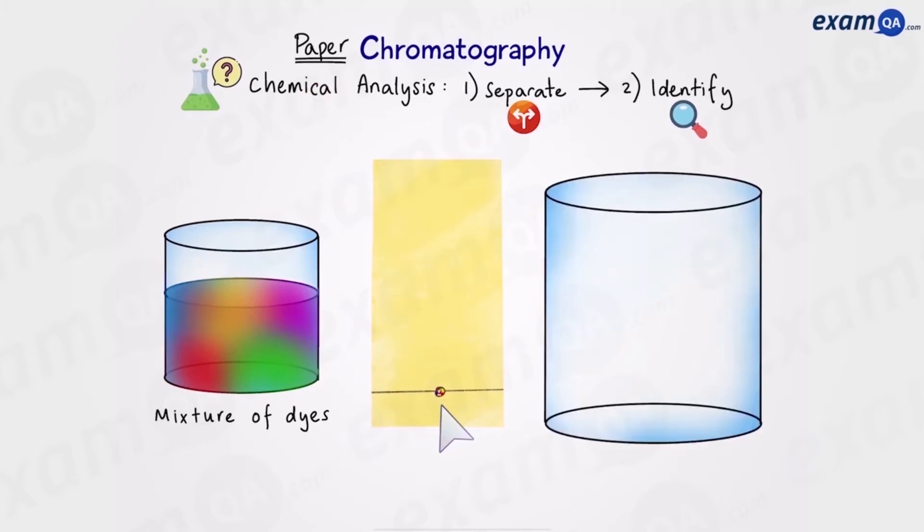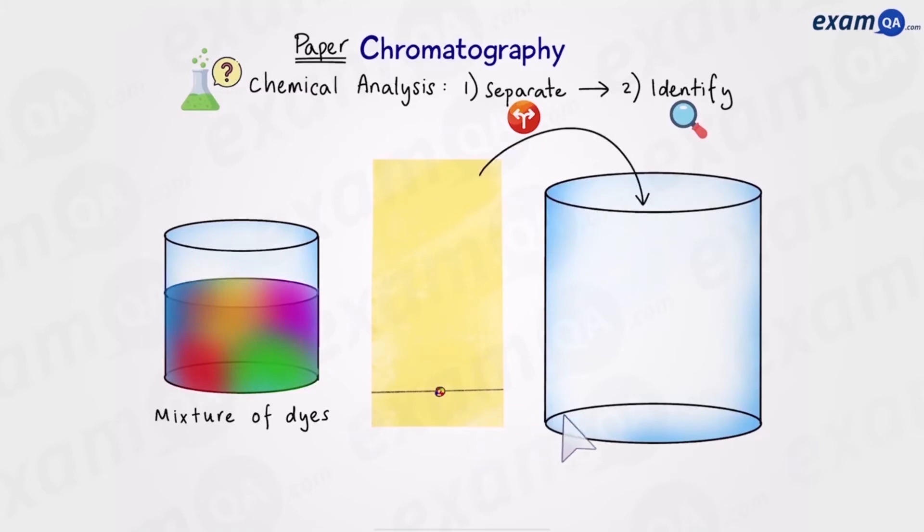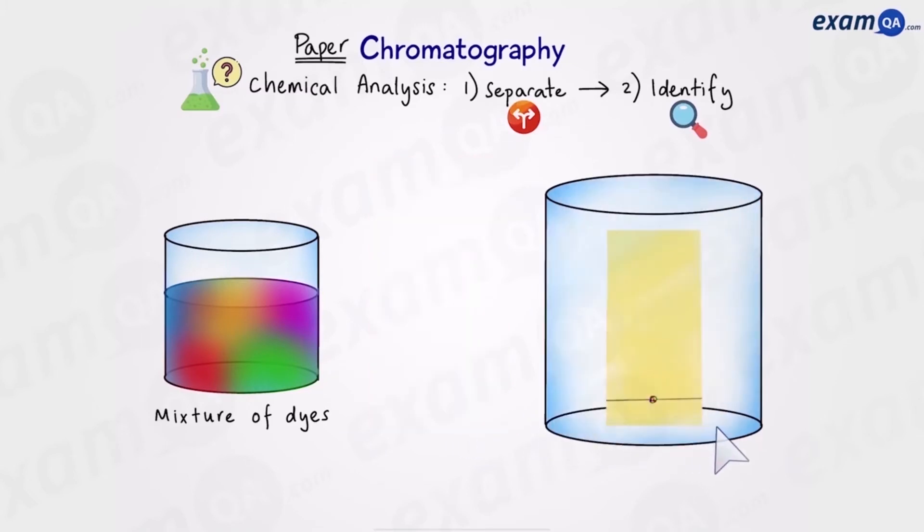Okay now we're ready to take a beaker and place our chromatography paper into the beaker. We're going to then slowly add solvent making sure that the solvent does not go above the start line. If the solvent goes above the start line it will dissolve the mixture and the experiment will be ruined.